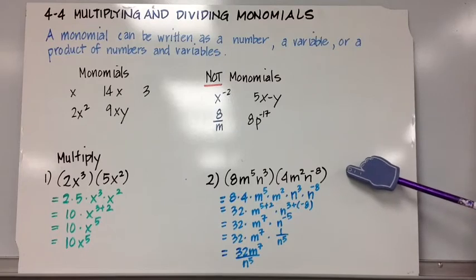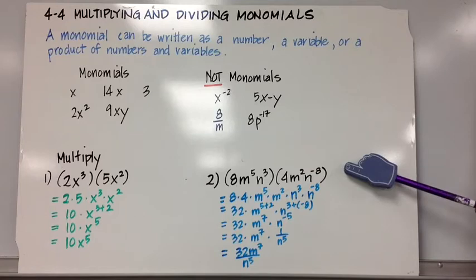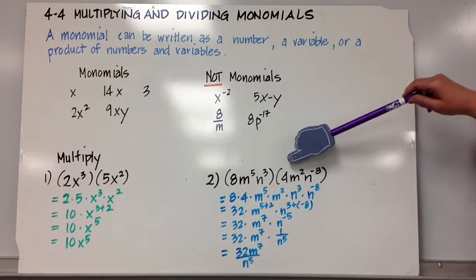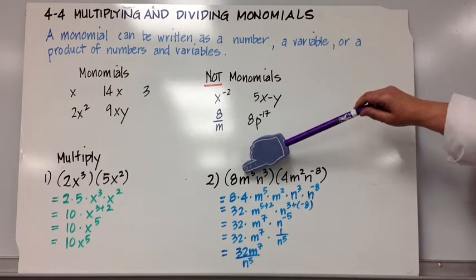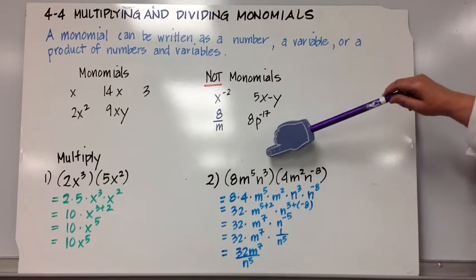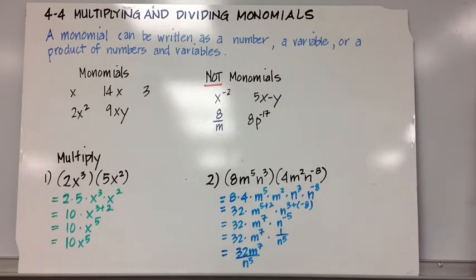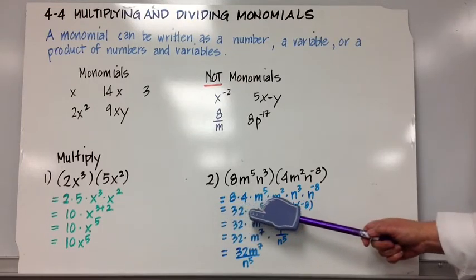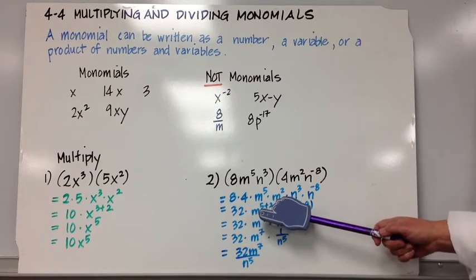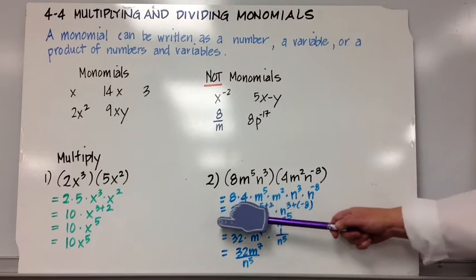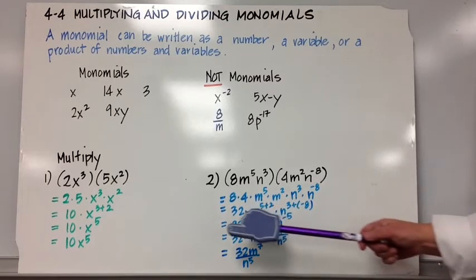Let's do it again. 8m to the 5th n cubed times 4m squared n to the negative 8th power. I have constants 8 and 4, terms with m as the base, and terms with n as the base. So I'm going to use the commutative property to reorder: 8 times 4 times m to the 5th times m squared times n cubed times n to the negative 8th. 8 times 4 is 32.